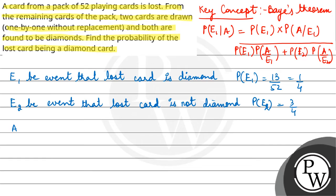We have an event A. A be the event that two cards drawn are both diamonds.